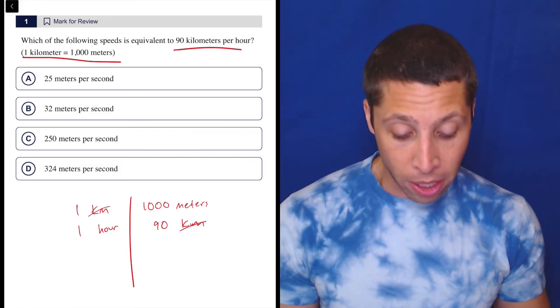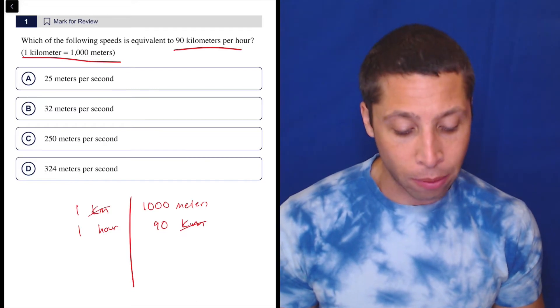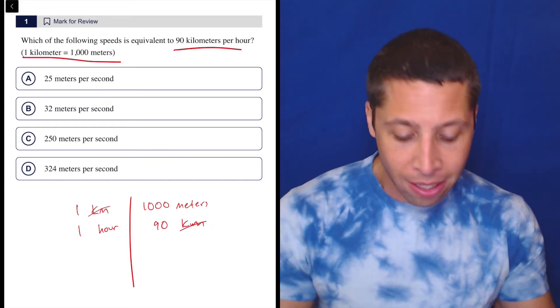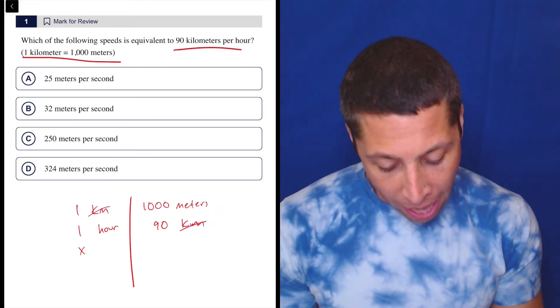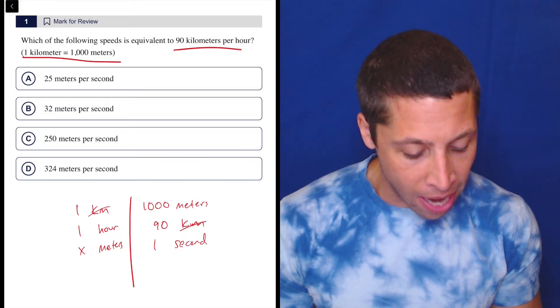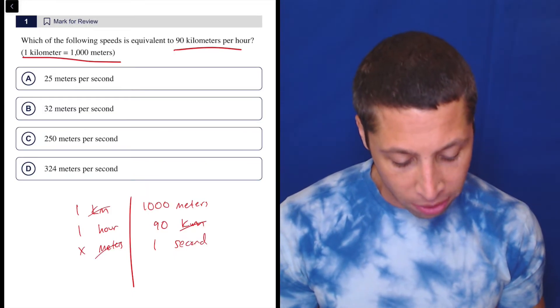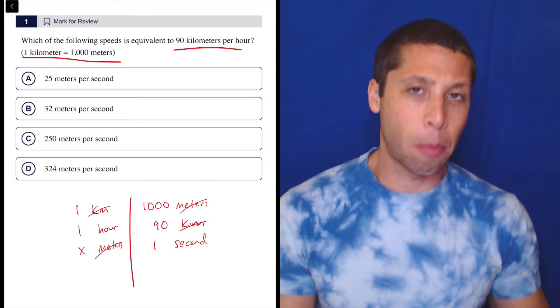So one thing I could do here is, since it's kind of like an X that we're asking for, right? Which of the following is equivalent? These are all kind of like an X number that we're solving for. We could just put X meters here per one second, right? That's now the answer choices. We don't know exactly which one. We're not picking one, but let's cross out meters, cross out meters. But we still have a problem.